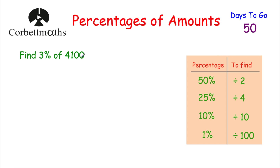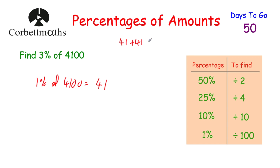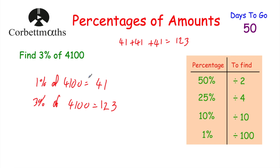The next question says: find 3% of 4,100. To find 3%, I'm going to start by finding 1%. So 1% of 4,100: divide by 100, which gives 41. Now to find 3%, we can add 41 plus 41 plus 41, which is 123. Or just take our 1% result of 41 and multiply by 3: 3 times 41 equals 123. So 3% of 4,100 is equal to 123.